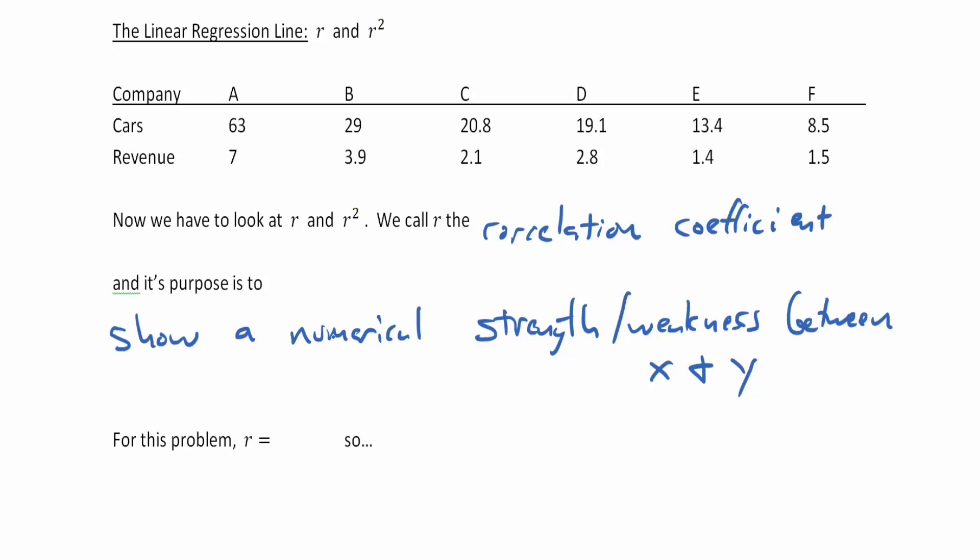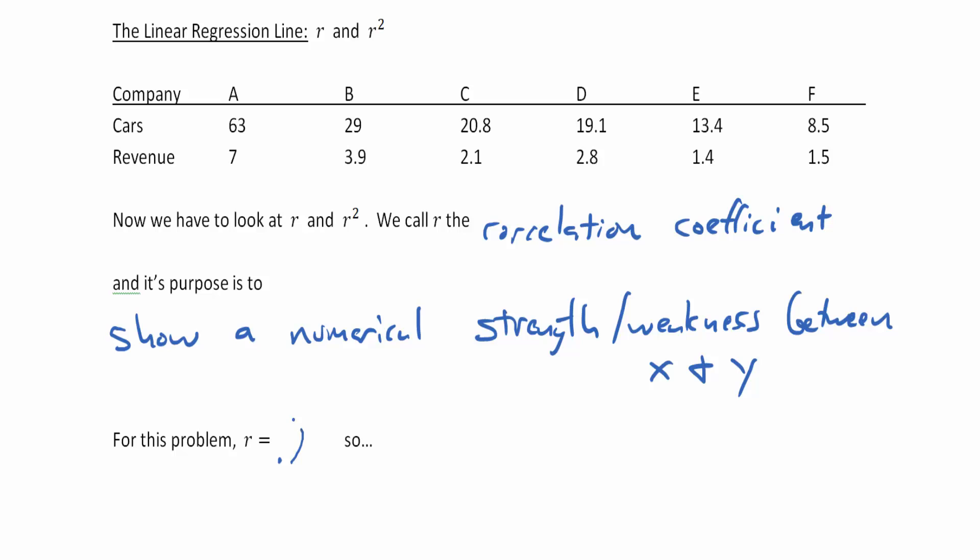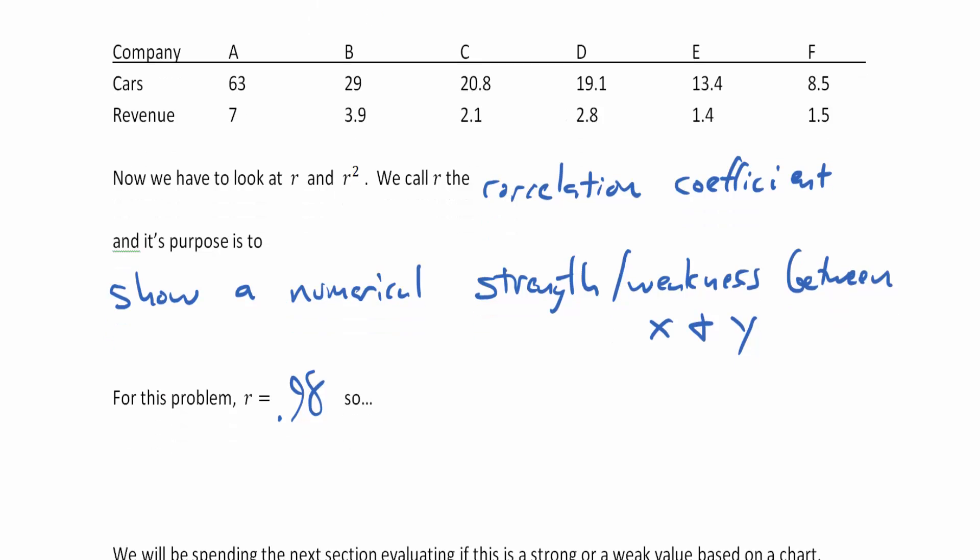So we're going to have an R value, and the R value could be all the way down to negative 1 and all the way up to positive 1. The closer the R value is to negative 1 and positive 1, the stronger it is. If the R value is close to 0, that's not a very strong correlation. Now let's take a look at what we had for our R value. Our R value was 0.981. I'm just going to round to two decimals here, 0.98. So is that close to 1? It is very close to 1.